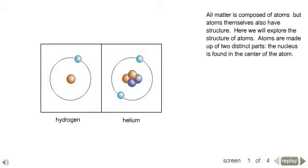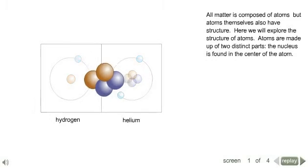Atoms are made up of two distinct parts. The nucleus is found in the center of the atom.